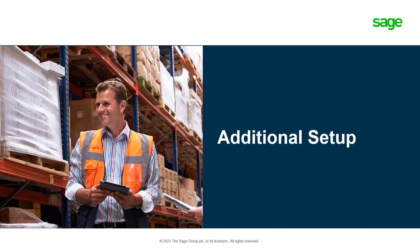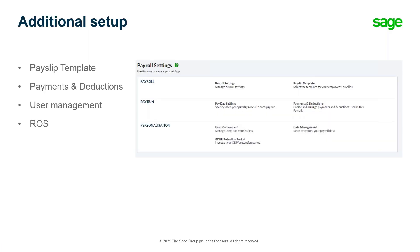Before you start processing payroll, there are a few additional steps to consider. In the payroll settings area, click payslip template to choose from three different templates depending on what you want your payslip to look like. The payments and deductions section in payroll settings allows you to set up salaries, basic hours, hourly or salaried payments, holiday pay, bonuses, overtime, and deductions. You can set up additional users by going into settings and clicking user management. Please remember that if you are a new company you will not be able to access ROS until you download your digital certificate — keep it in a safe and secure location on your machine. For further information visit the Revenue website.